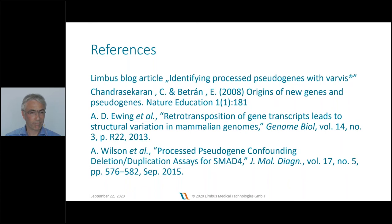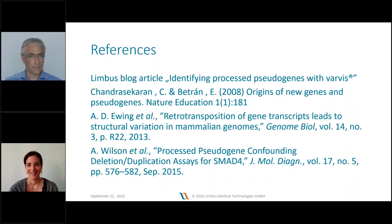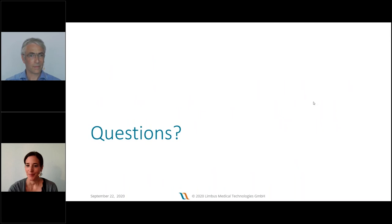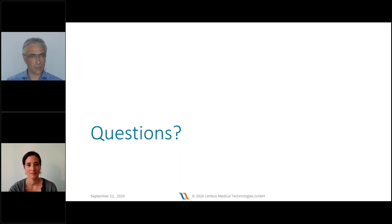A question from the chat: is there a minimum coverage for NGS required to do reliable CNV analysis? There are a number of quality criteria that we apply, one of which is depth of coverage. For a Twist exome, we recommend approximately 150x average depth in order to achieve single-exon resolution with CNV analysis.